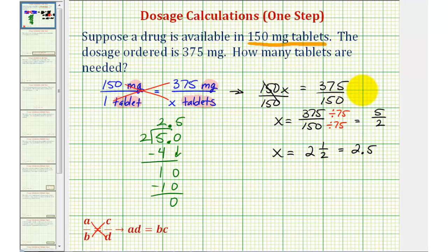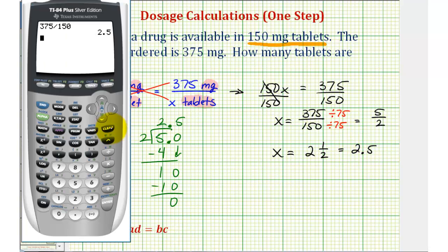Of course, if we're allowed to use a calculator, we can find this value much quicker. 375 divided by 150 is 2.5.